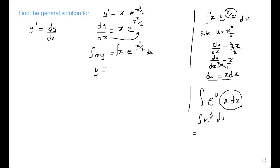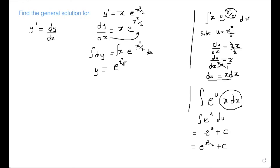So it means I have the integral of e to the u du. Integrating this, we're going to have e to the u plus c, because the integral of e to the u is just e to the u. But since u is x square over 2, I replace u with x square over 2. Then I have my plus c. So the general solution is y is equal to e to the x square over 2 plus c.